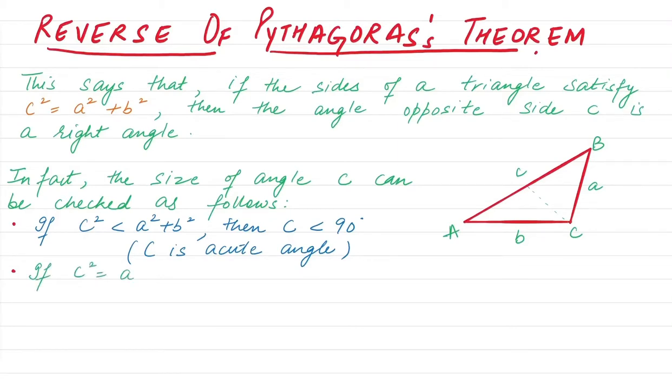If C² = A² + B², then C equals 90 degrees. That means this satisfies the Pythagoras theorem, so C is a right angle triangle. Remember that Pythagoras theorem applies only to right angle triangles.